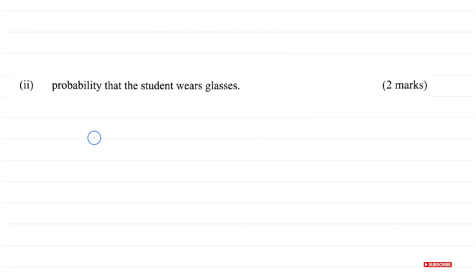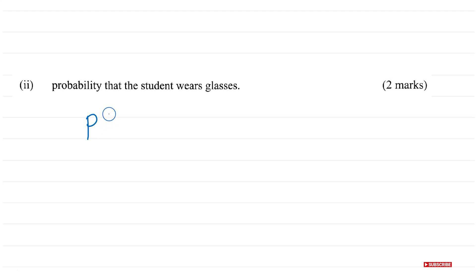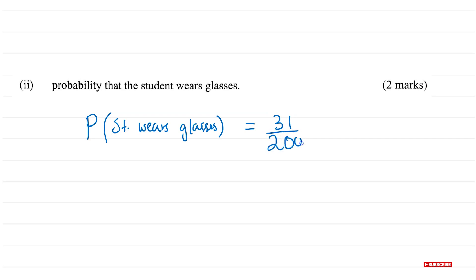For part AII, we are asked to find the probability that a student wears glasses. We have already calculated the number of students wearing glasses, which is 31. So the probability a student wears glasses is equal to 31 divided by 200. Since 31 is a prime number, you cannot simplify this fraction.